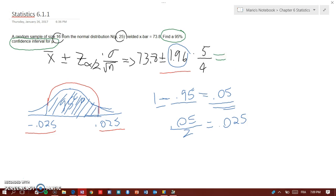Then what does that mean? Well, this means that we are 95% sure that this x̄ is between 71.35 and 76.25.